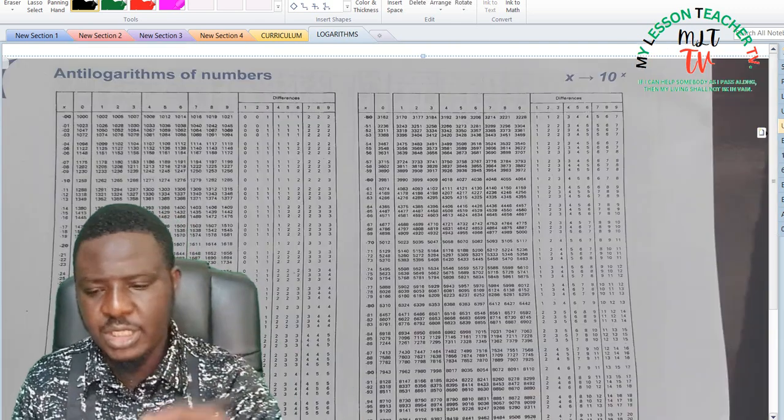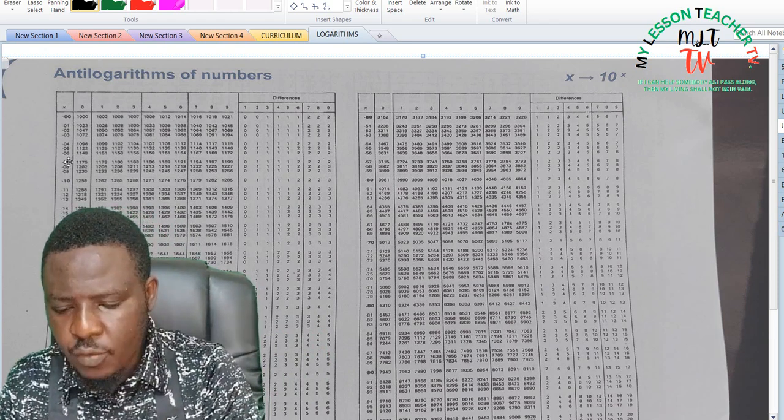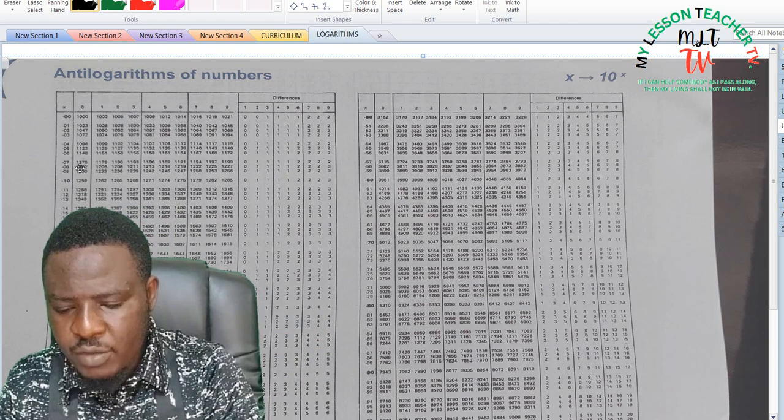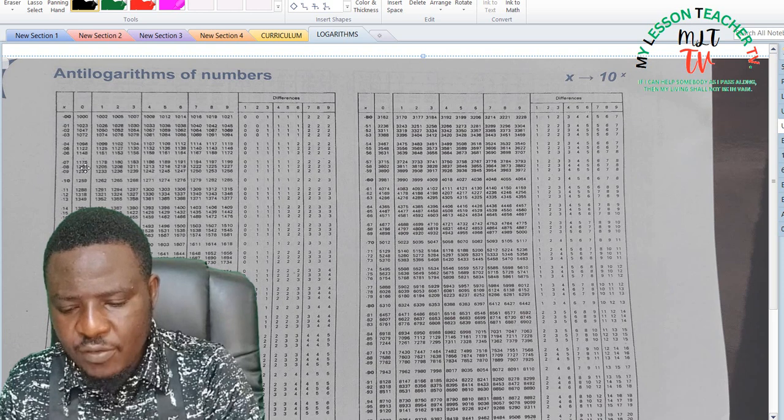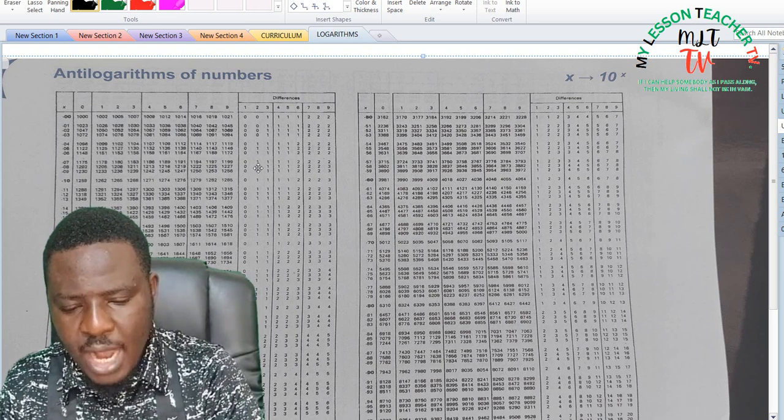So going to the anti-log table which is this, this is the anti-log of numbers. I am going to look for 0.07 which is this, this is 0.07 under 0, it gives me 1175. Difference 2 of that is said to be 1, so when you add 1 to 1175 it will give you 1176.